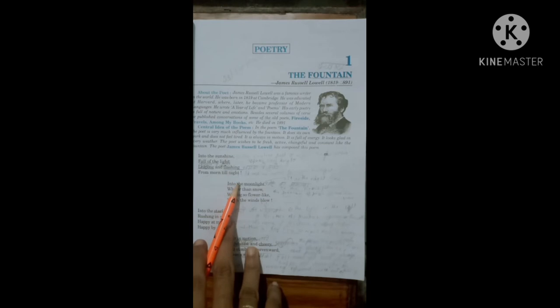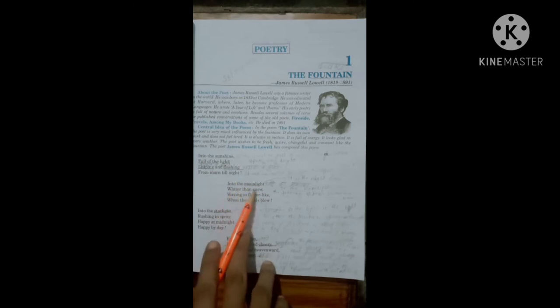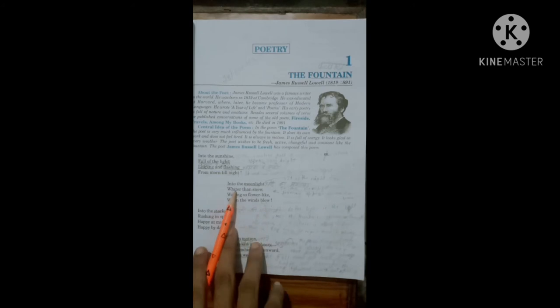Into the moonlight whiter than snow, waving so flower-like when the winds blow. The explanation is: In the moonlight the fountain appears whiter than snow and when wind blows it moves here and there just like the flower moves in the wind.